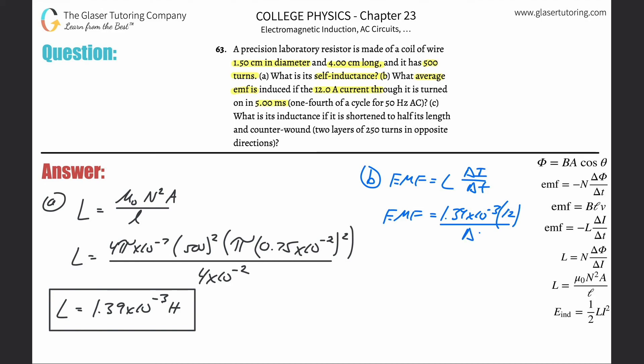They told us it was five milliseconds. We need that in seconds, so multiply by 10⁻³. So that's our answer from before, multiplied by 12, all divided by 5 × 10⁻³, and we get about 3.33.